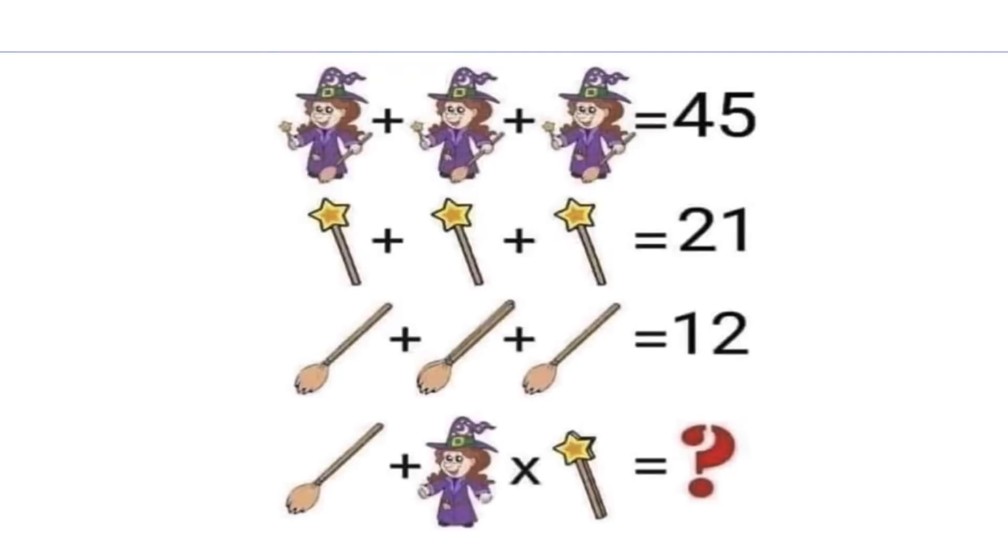For the first line, each figure has a value of 15 because there are three figures added up together to 45. So this means the first figure is 15, the second is 15, and the third is also 15. And we will go back to line 1 later.